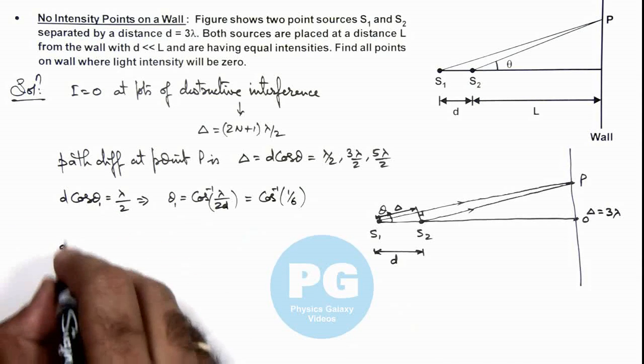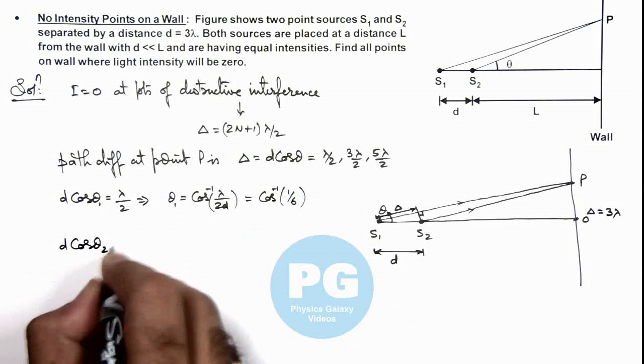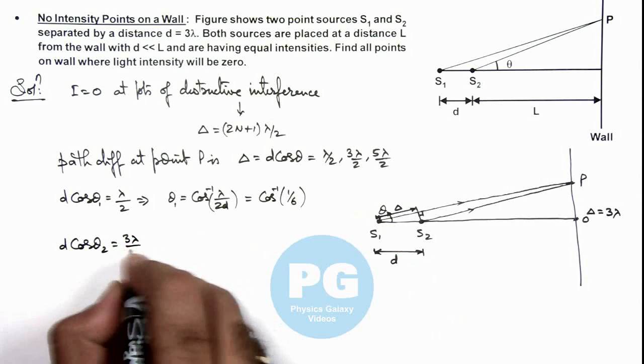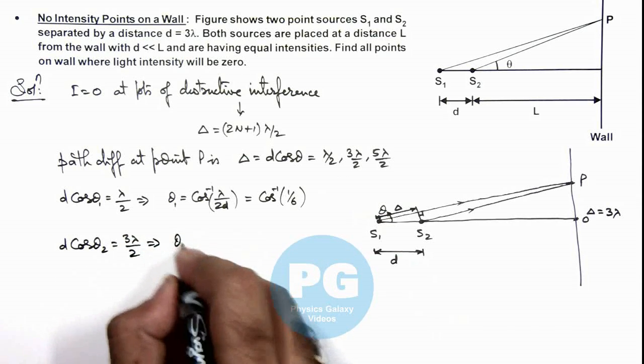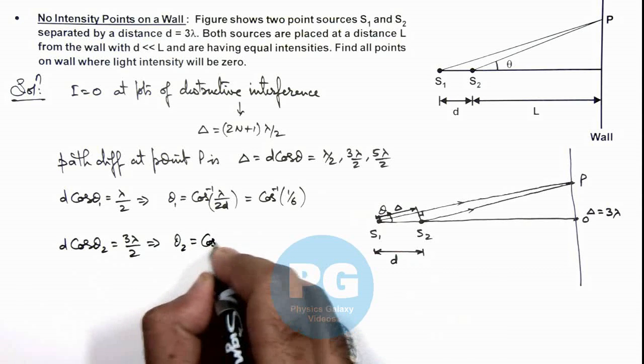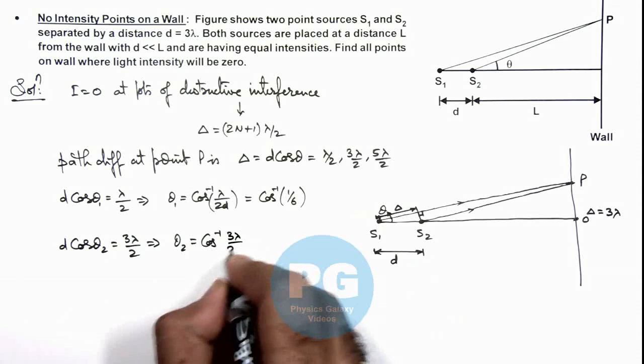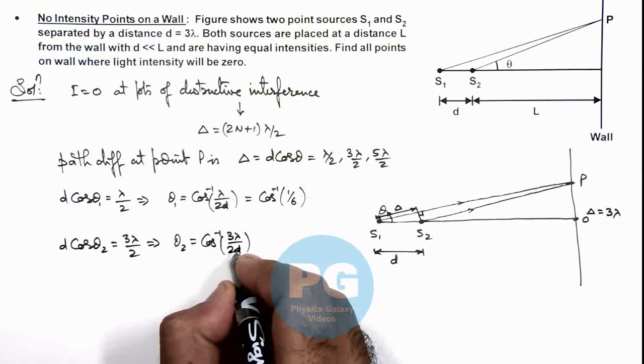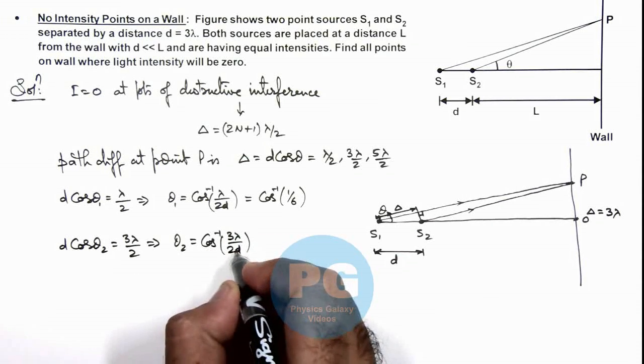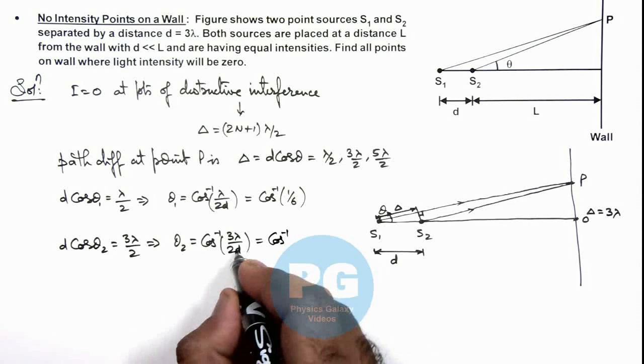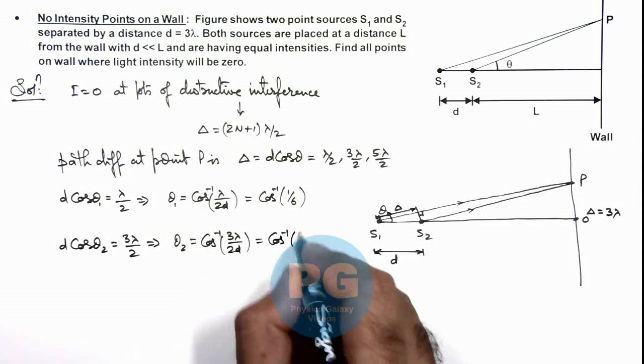Another we can write d cos θ₂ equals 3λ/2. If we put d equals 3λ, this will be cos inverse of 1/2.